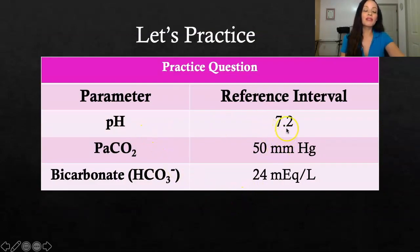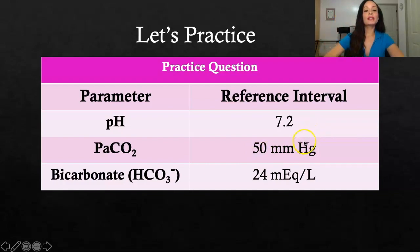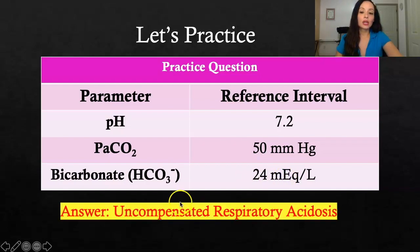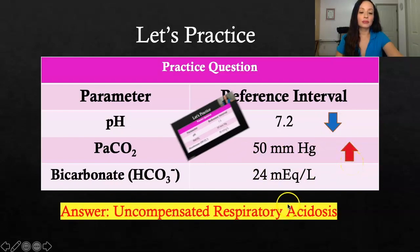Practice question one: pH is 7.2 — that's acidic. CO2 is 50 — normal CO2 is 35 to 45, so that's elevated. Bicarb is normal at 22 to 26. The pH is going down and the CO2 is going high, with normal bicarb, meaning the body isn't trying to compensate at this moment. So it's uncompensated respiratory acidosis — pH is low, CO2 is high, arrows facing in opposite directions.